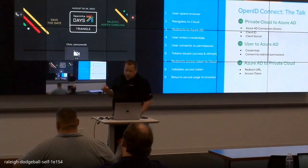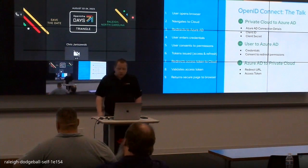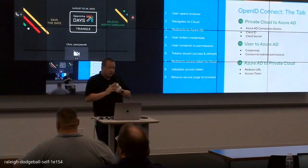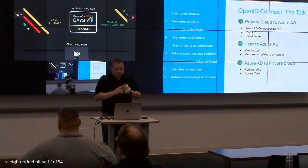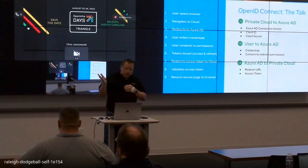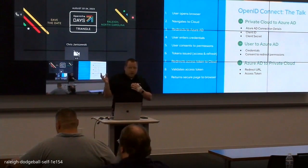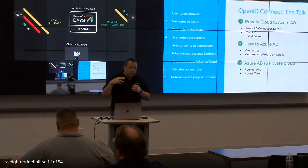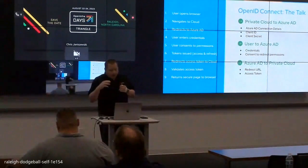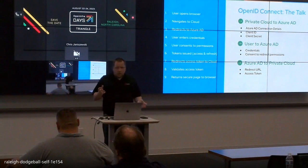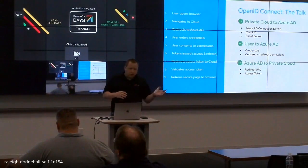When each of these points are talking to each other, when the private cloud is actually talking out to Azure, it needs the connection details — it needs a client ID and a client secret so that it can authenticate who is actually reaching out to it. When the user connects to Azure AD, you provide your credentials and also your consent for redirect permissions. Finally, Azure needs to know what the redirect URL is to go back to the cloud you came from, and then it provides the access token. Those are the key communication aspects that need to be configured when setting up OpenID Connect with either OpenStack or OpenShift.